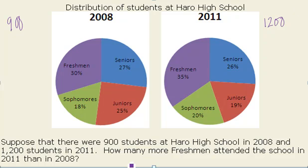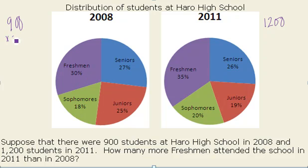What it wants us to find out is how many more freshmen attended the school in 2011 than in 2008. To me, that means I need to figure out how many freshmen attended in each year. So 30% of the 900 students were freshmen in 2008, meaning I need to find 30% of 900, or multiply 900 by 0.3, which results in 270 students.